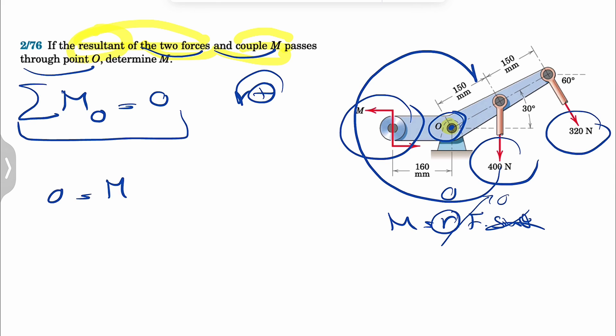We have the moment of 400 about O. This one's clockwise, so negative 400 times the vertical distance to the line of action. We're looking for this and we know this angle is 30 degrees. If you look at this right triangle that I'm highlighting in blue, the vertical distance would be 150 cosine of 30.